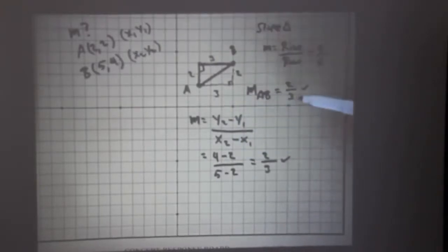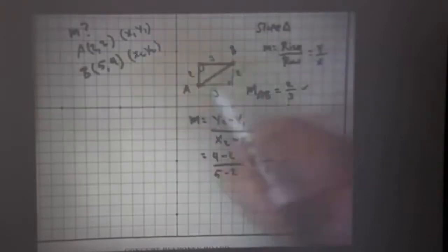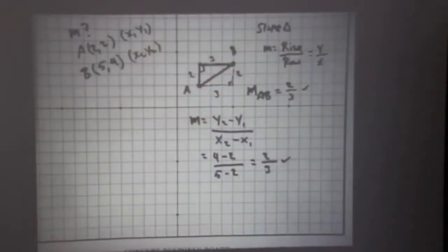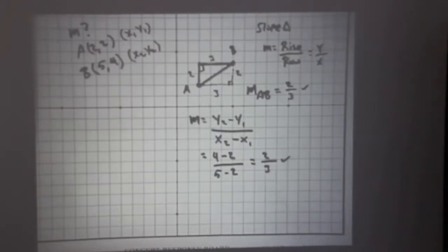Notice our slope value is positive. That should make sense. We said earlier this is a positive slope line segment. So I just want to make sure that the values kind of gel for you that way.